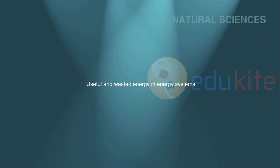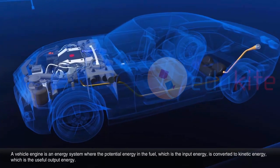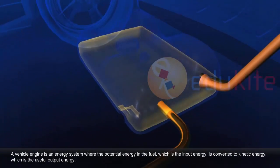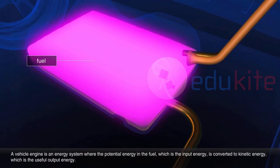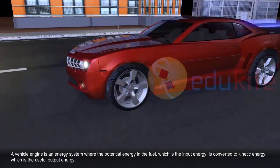Useful and Wasted Energy in Energy Systems. A vehicle engine is an energy system where the potential energy in the fuel, which is the input energy, is converted to kinetic energy, which is the useful output energy.